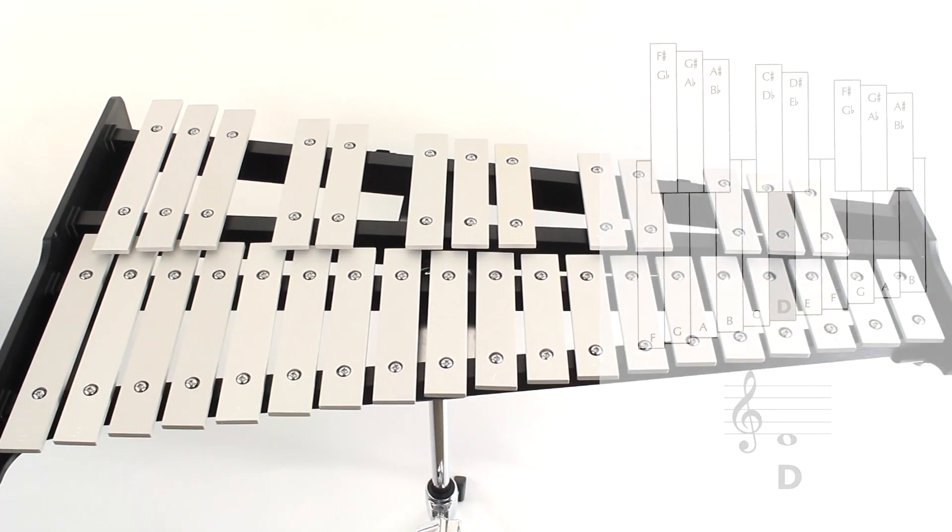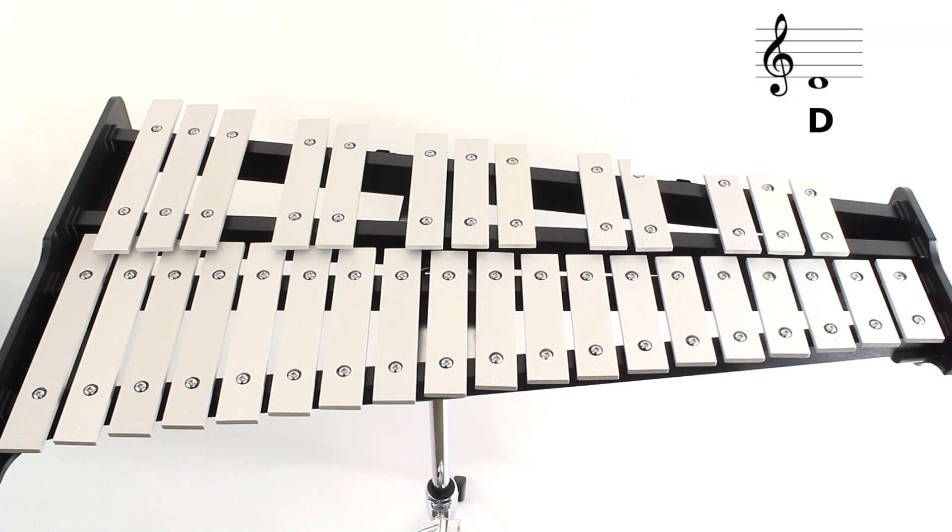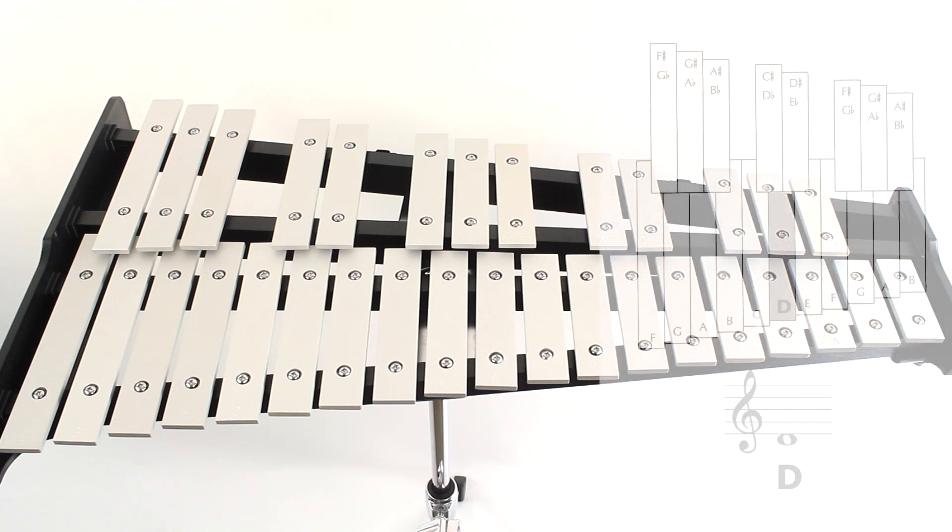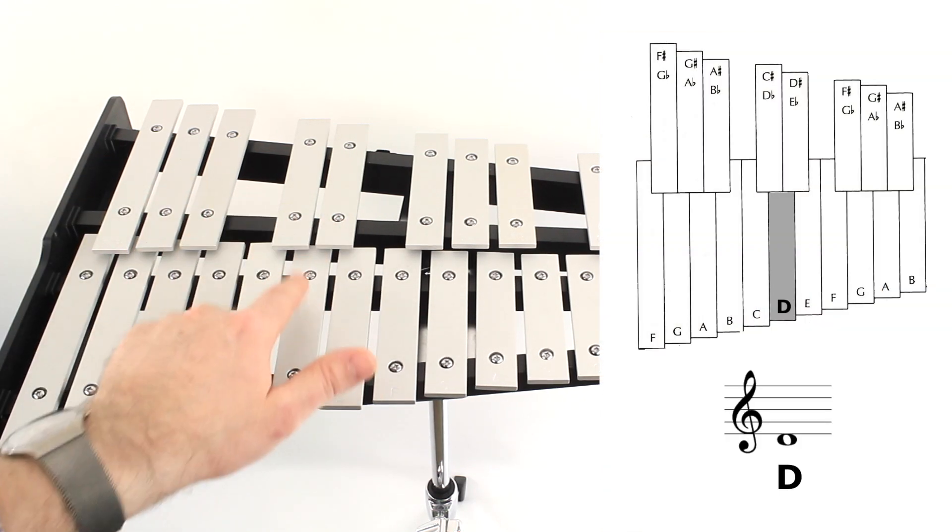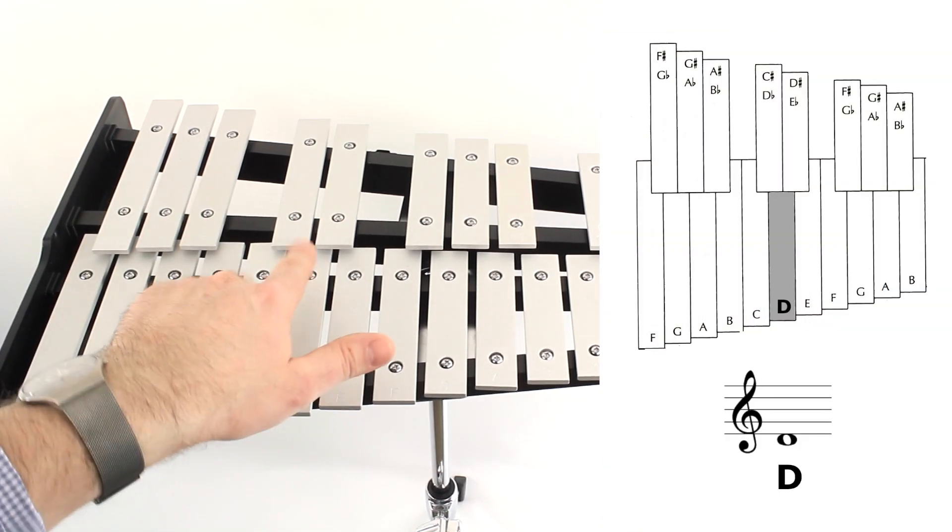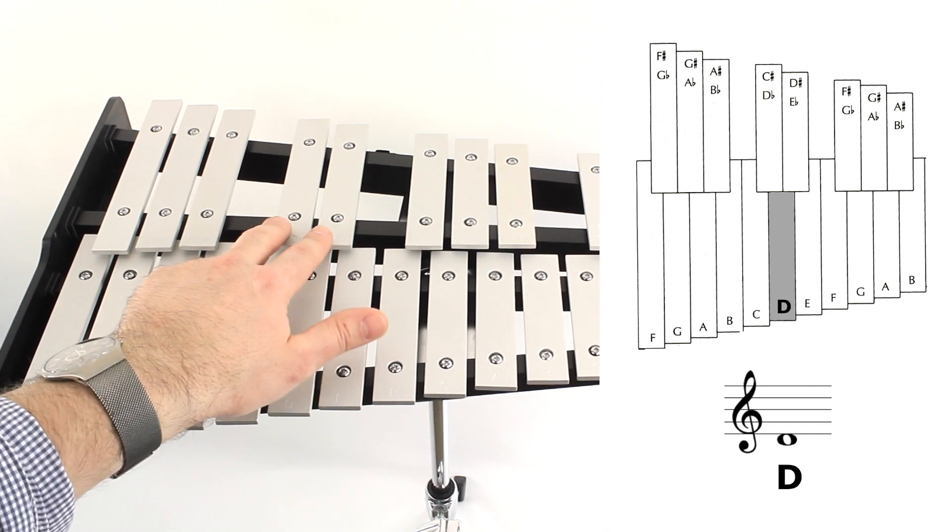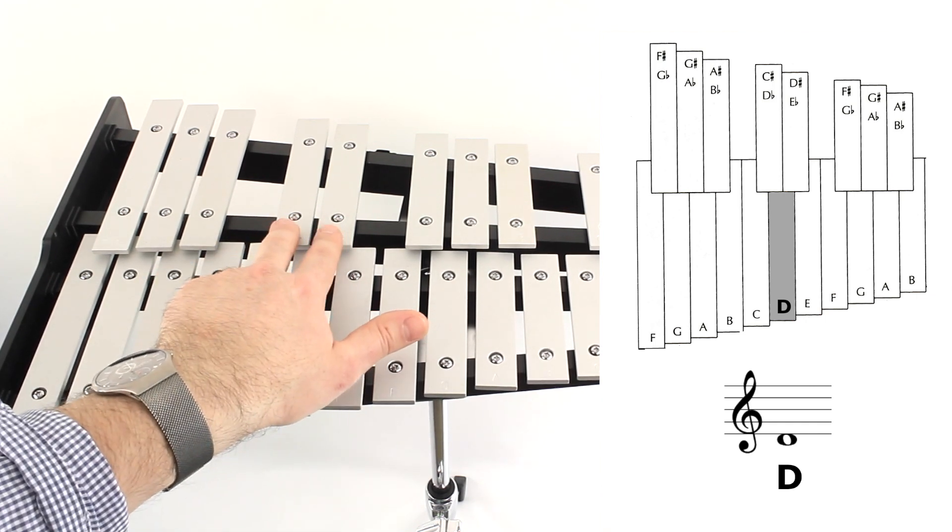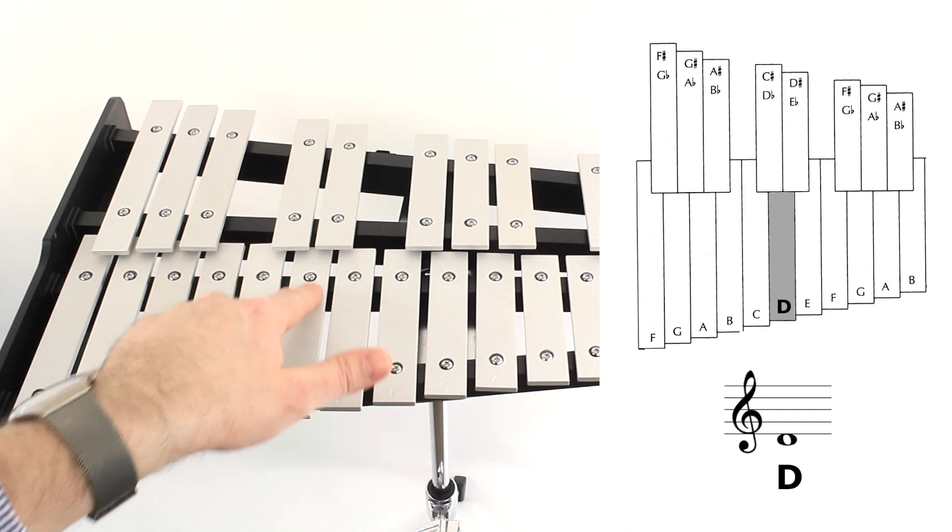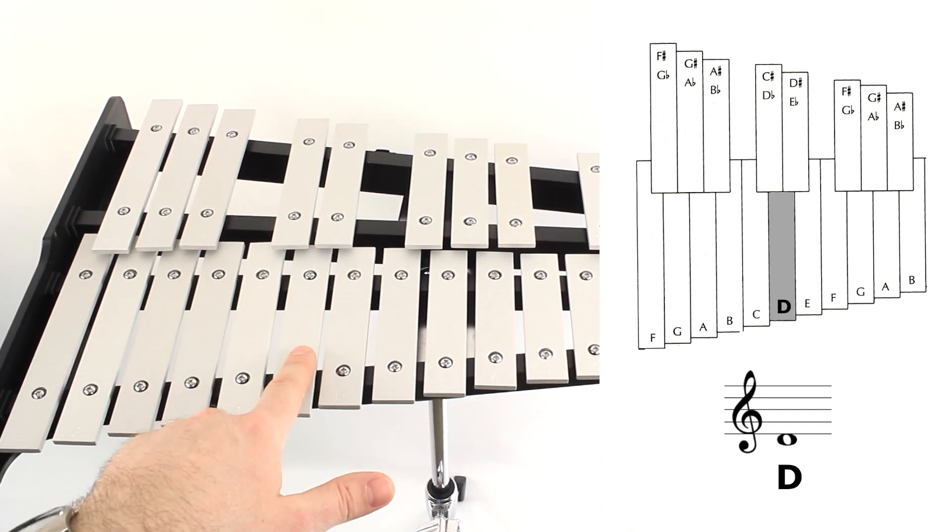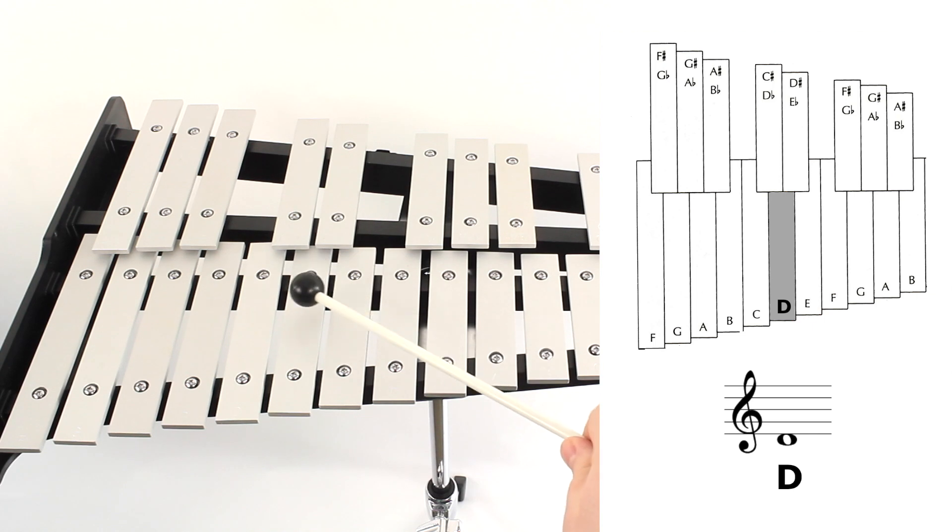Let's use our note chart to find the note D. On our music staff, D is written just below the bottom line of the staff, and you can see from our chart that the note D on the bells is located right below and in between these two upper keys. So find this pair of keys in your upper row and go to the key right in between them, right here. That is a D. Let's play that D with our right mallet.